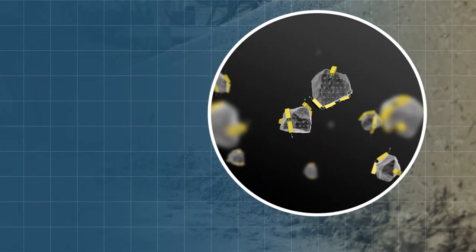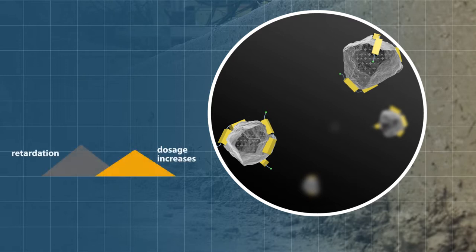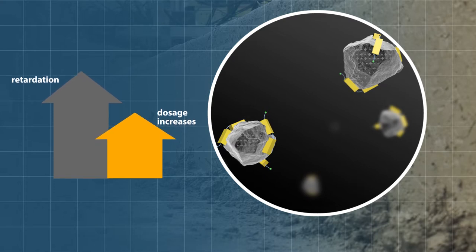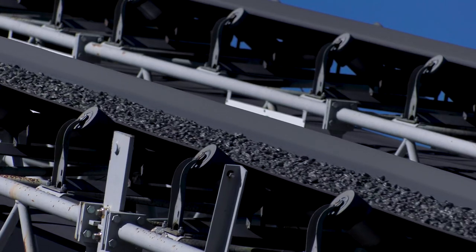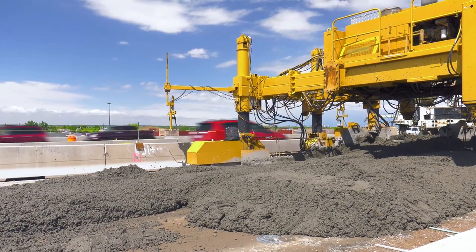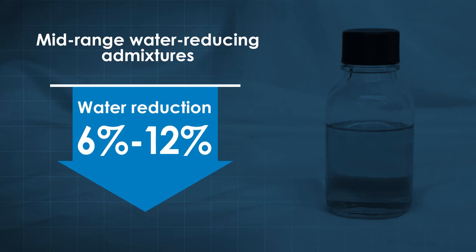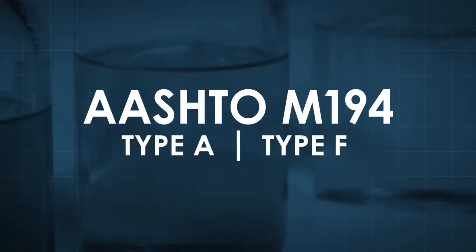Normal water reducing admixtures act by adhering to the cement grains and dispersing them through electrostatic and steric repulsion. They can affect setting, with retardation more common as dosage increases, and are sensitive to temperature — interactions with other mixture constituents can sometimes result in flash setting or severe retardation. Mid-range water reducing admixtures provide water reduction between 6 and 12 percent without the retardation associated with high dosages of normal water reducing admixtures. They are compliant with AASHTO M194 Type A and often meet Type F requirements.